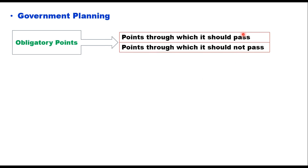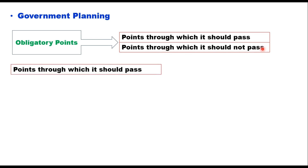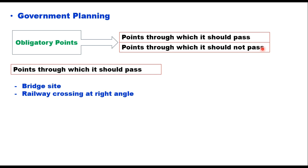Obligatory points are of two types: positive obligatory points, through which alignment should pass, and negative obligatory points, through which it should not pass. Examples of positive obligatory points include a bridge site — if the alignment is to pass through a river or water body, it should cross at a point where the cross section is minimum. For railway crossing, it should be at right angles as much as possible, as that provides more visibility to road and railway users, and therefore the alignment may need to change to achieve this.